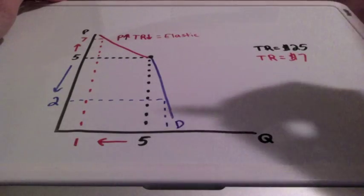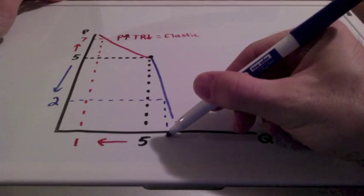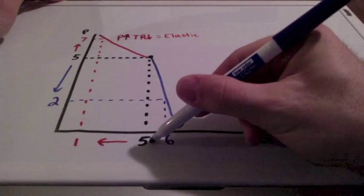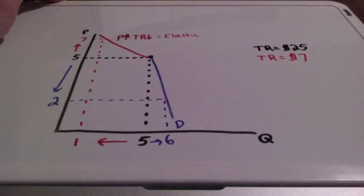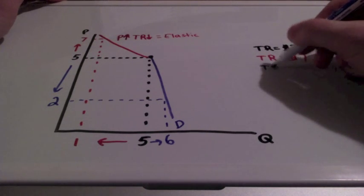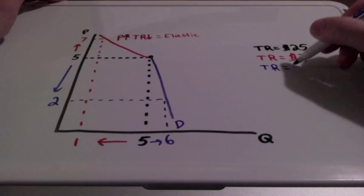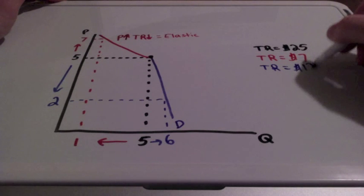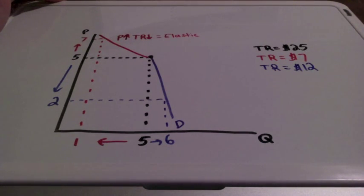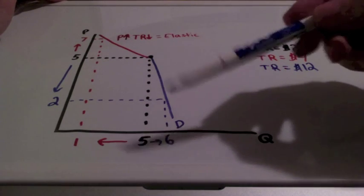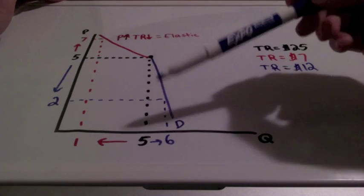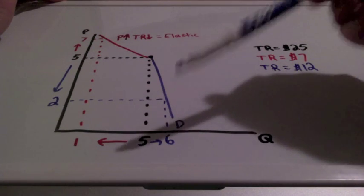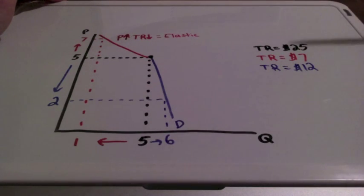Let's say quantity demanded goes up from 5 to 6 units. Our total revenue is going to equal $12. What is the other firm going to do? The other firm is also going to lower their prices. They're going to match this price decrease because they don't want to lose out on that business and they want to keep up with their competition.